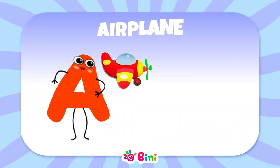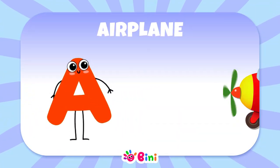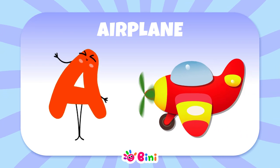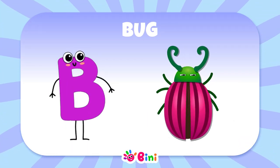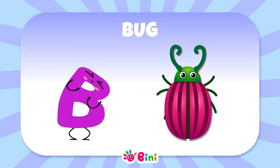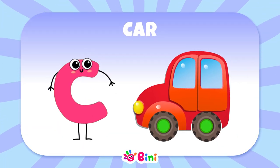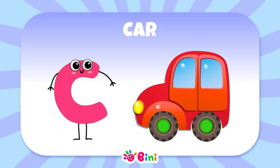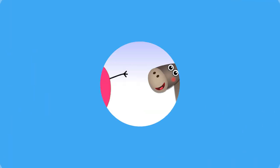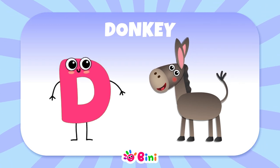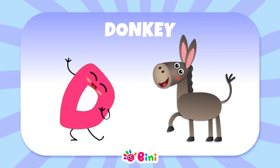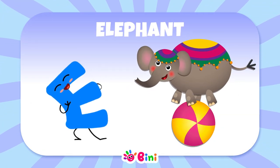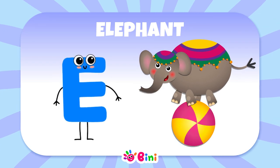The word airplane begins with the letter A. The word bug begins with the letter B. The word car begins with the letter C. The word donkey begins with the letter D. The word elephant begins with the letter E.